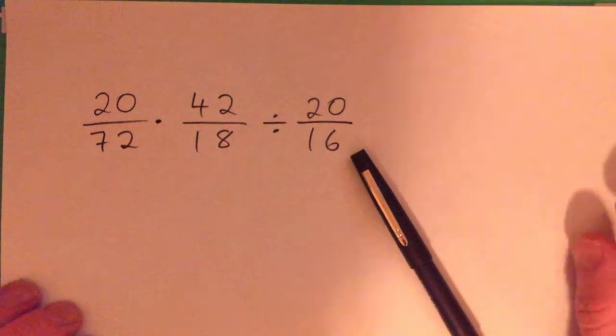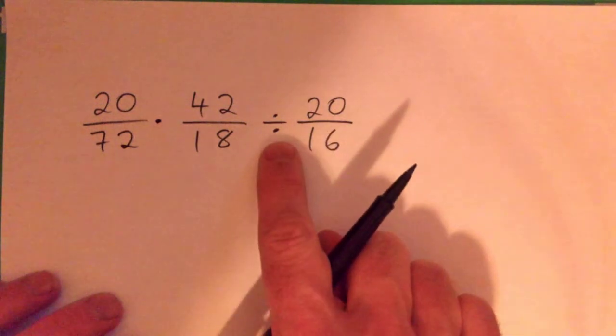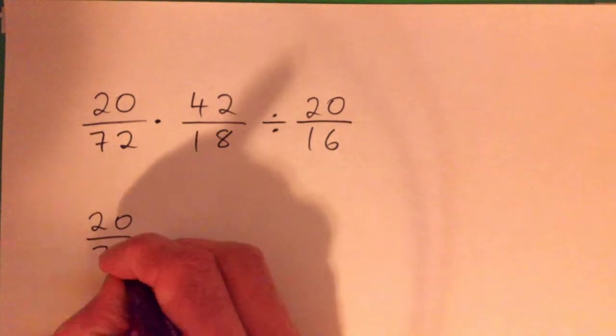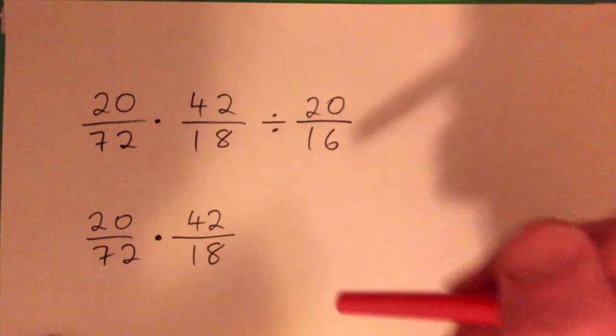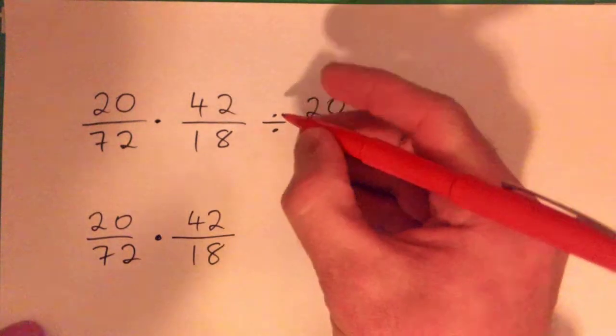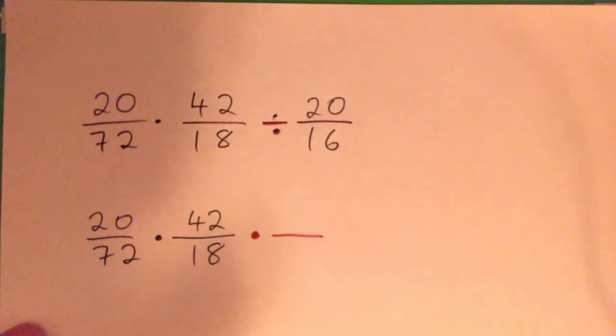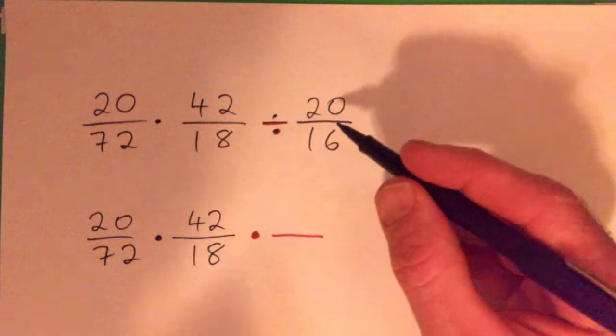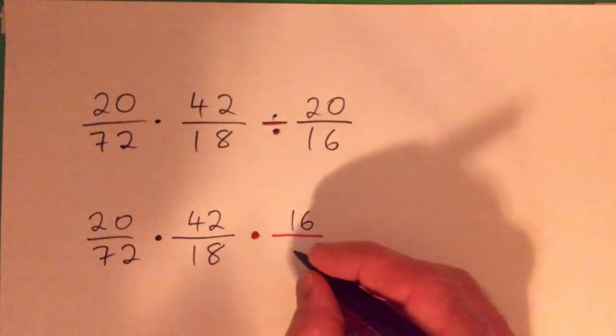One thing we can do to start out with is we can turn this division into a multiply. So we can write 20 over 72 times 42 over 18. And then when we divide by a fraction, how do you turn that into multiplying? Yeah, so when you divide by a fraction, the same thing is multiplying by the reciprocal.